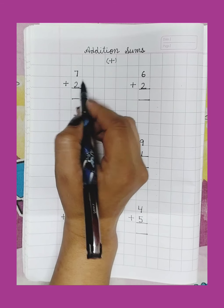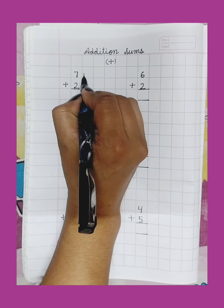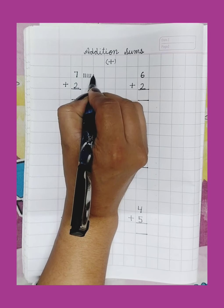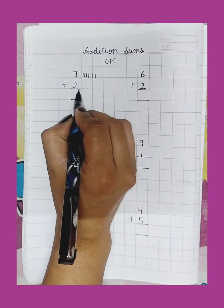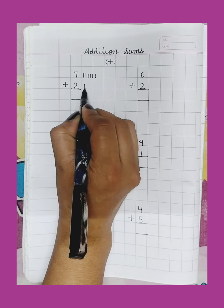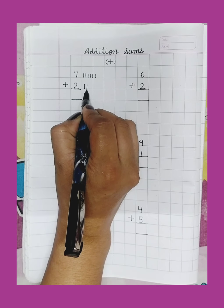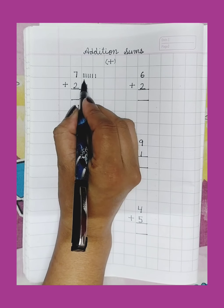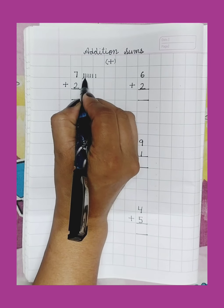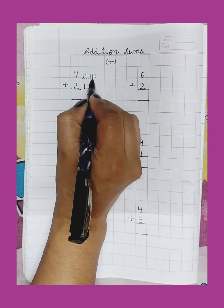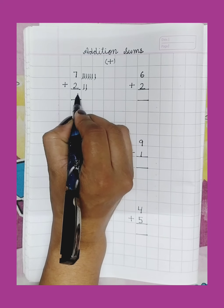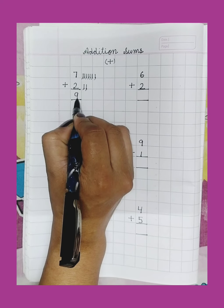Number 7. Draw 7 lines: 1, 2, 3, 4, 5, 6, 7. Number 2. Draw 2 lines: 1, 2. Count the lines: 1, 2, 3, 4, 5, 6, 7, 8, 9. Write here 9.